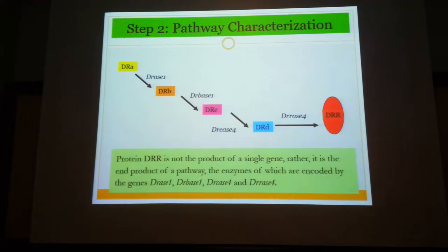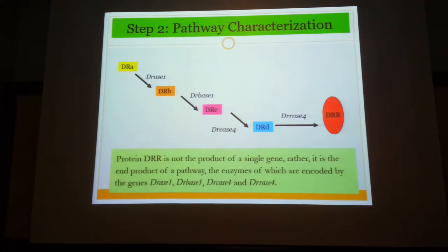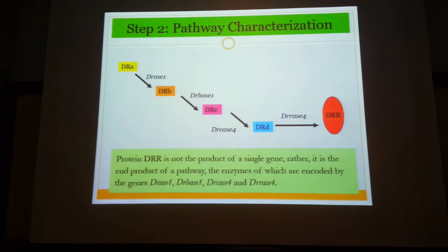As you can see in the slide, DRR is a protein whose production requires several enzymatic steps. The protein in its original form is DRA. The amino acid linkages must be changed, requiring enzyme DRAACE1. It then goes through further steps: DRBASE1 and DRCASE1 — hypothetical enzymes required for the transformation of DRA into DRR. You can assume it is a biosynthetic compound or a secondary metabolite.